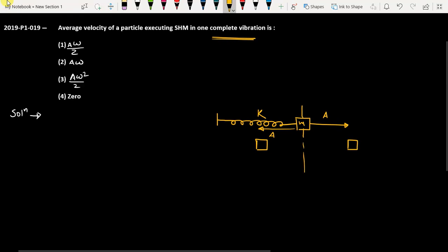This is called the mean position where x equals zero, and x equals A are the extreme positions. The particle starts from the mean position, goes from mean to extreme, and then comes from extreme to mean. Now the particle will not stop here. This is not the complete vibration; this is half of that.